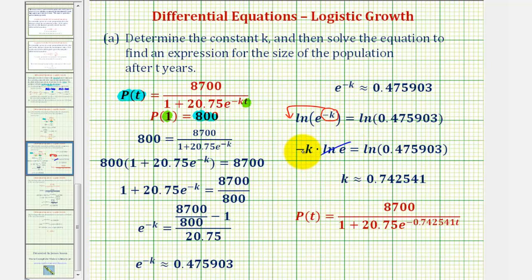To solve for k, we divide both sides by -1, giving us k ≈ 0.742541, which is the first part of question a. Then for P(t), we substitute the value of k into the equation.